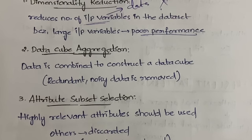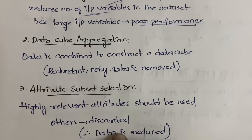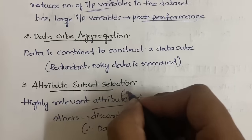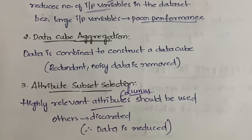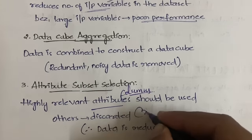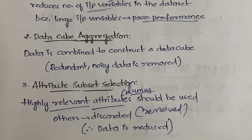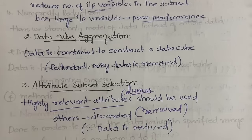Third is attribute subset selection. Attributes are the columns in a table. Only highly relevant attributes are kept; irrelevant or less important ones are discarded. This reduces the data stored in the database while retaining only what matters for the analysis.